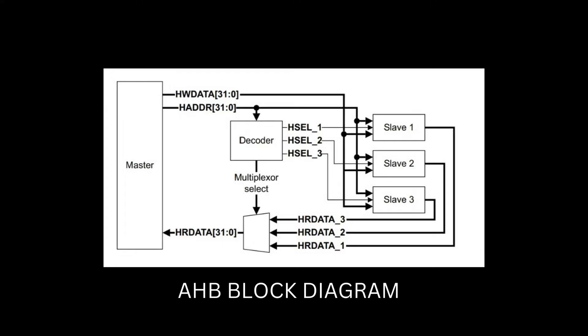Although low-bandwidth peripherals can be included as AHB slaves, for system performance reasons they typically reside on the AMBA Advanced Peripheral Bus. Bridging between the higher performance AHB and APB is done using an AHB slave known as an APB bridge.